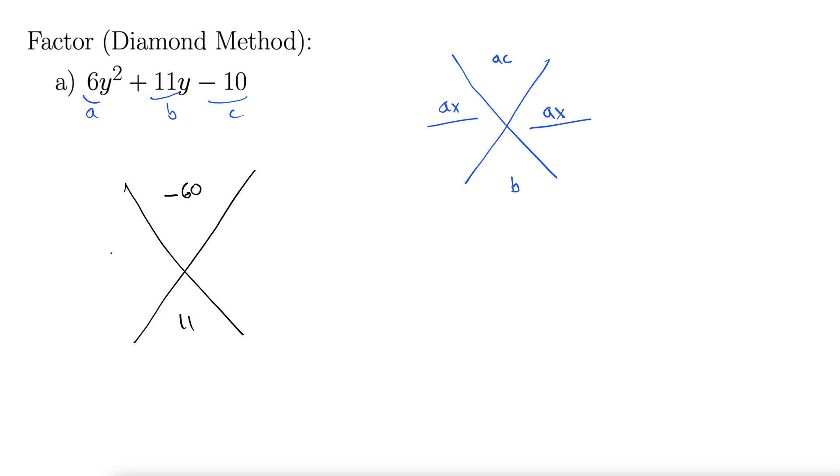6y goes here, ax essentially, or ay in this case, 6y, and then we do our dividing line. Now we want factors of ac that add up to b.